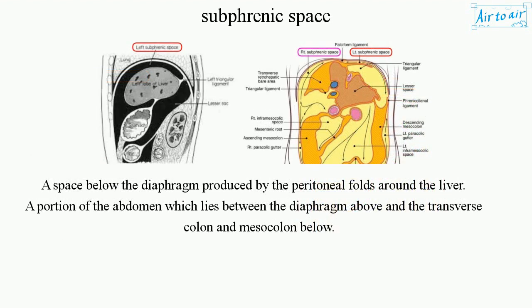Subphrenic Space: A space below the diaphragm produced by the peritoneal folds around the liver. It refers to a portion of the abdomen which lies between the diaphragm above and the transverse colon and mesocolon below.